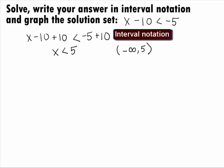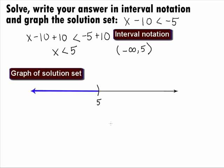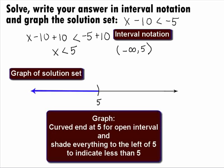Last, we need to graph this. The graph will look like the interval notation. We will have a curved end at 5, and to show everything less than 5, we will shade in everything to the left of 5 for our final answer for the graph.